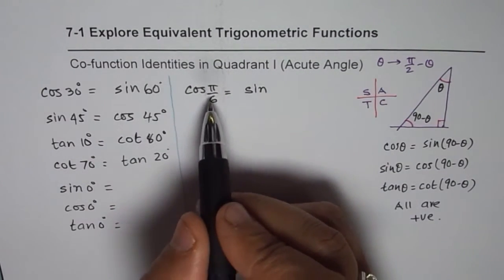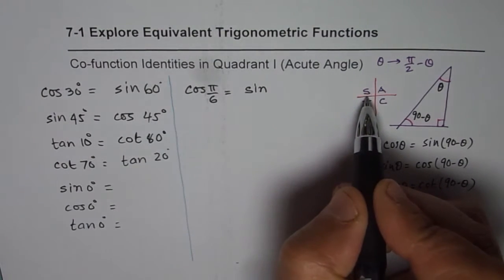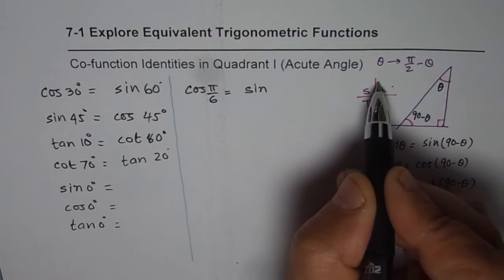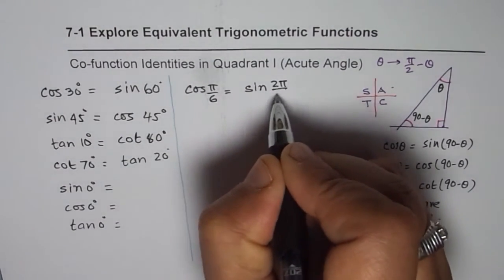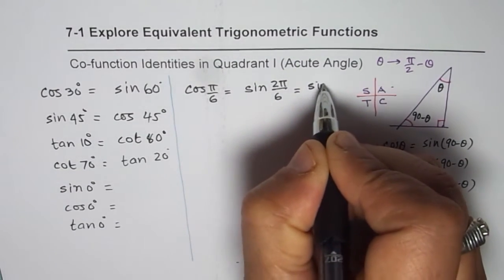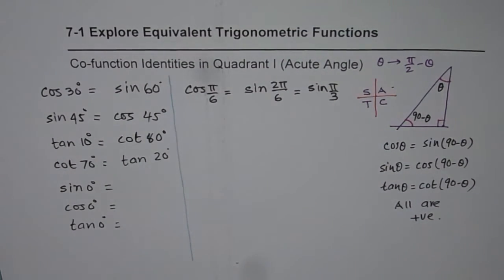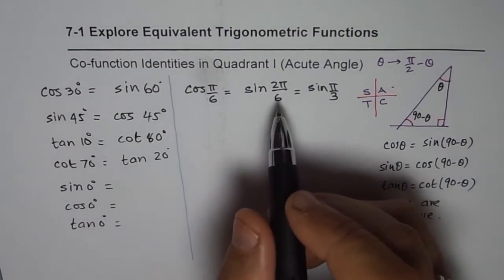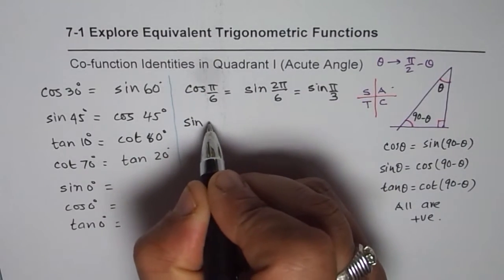Another way to think about it: pi by 6 means pi is divided into 6 portions and we've taken the first one. In the full pi by 2, there are 3 portions total, so 2 are left — giving sine of 2 pi by 6, which simplifies to sine of pi by 3. You can count angles this way, or you can do the math with pi by 2 minus theta.